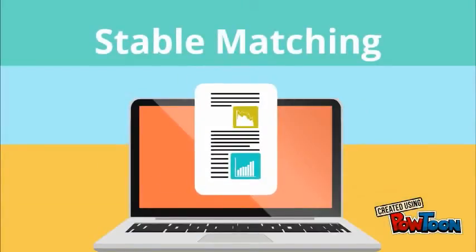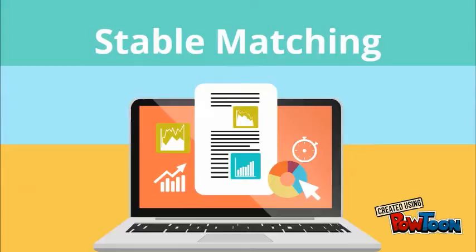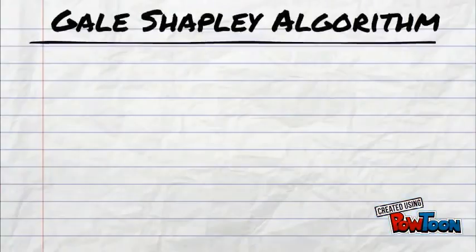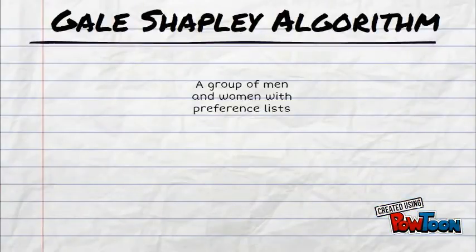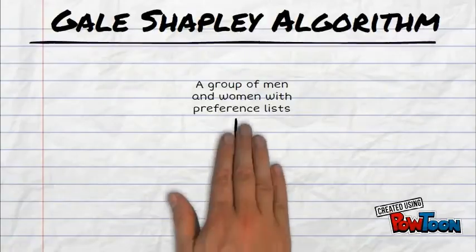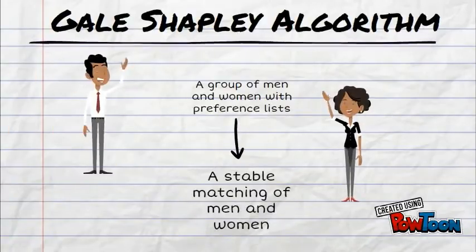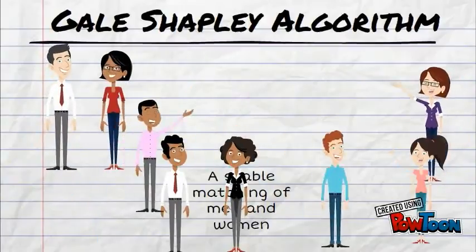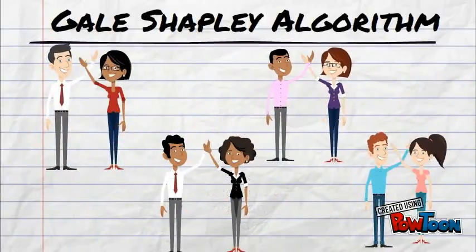Hello everyone! Today we'll be talking about Stable Matching. Let us say we have a group of men and women each with their preference list. We have to form a stable matching of men and women. This is done with the help of the Gale Shapley algorithm.